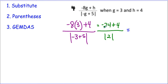Let's simplify the numerator. Negative 24 plus 4 is negative 20, and the absolute value of 2 is 2. And we can reduce that to negative 10.